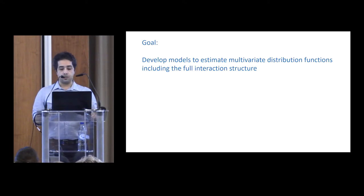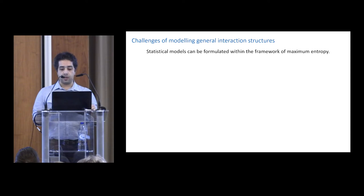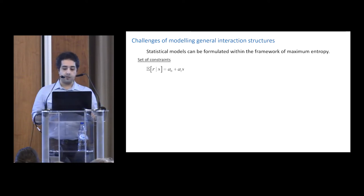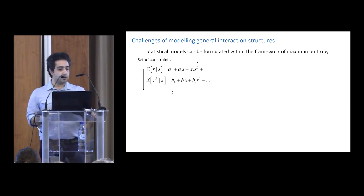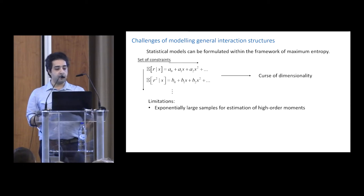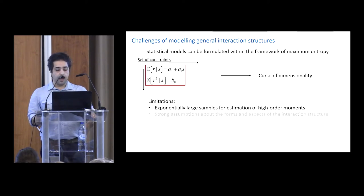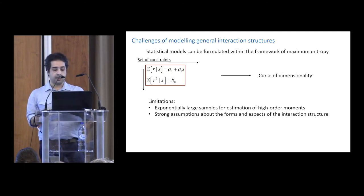A big goal in computational neuroscience is to develop more powerful models of multivariate interaction structures for neural representations. We can define this challenge in the language of maximum entropy: to estimate a probabilistic model, we start by defining a set of constraints on the aspects of statistics we want to consider. For example, the expected value of the response is considered a linear function of a set of predictors. But by increasing the complexity of dependencies or the order of interactions included in the model, we face the curse of dimensionality—needing exponentially large samples to estimate all parameters and higher-order moments. This forces us to limit our models and make strong assumptions by ignoring higher-order interactions or non-linear dependencies.